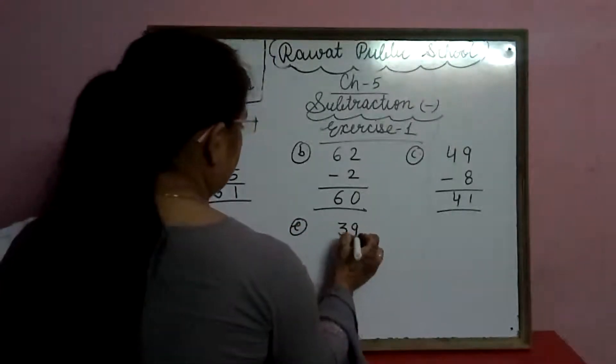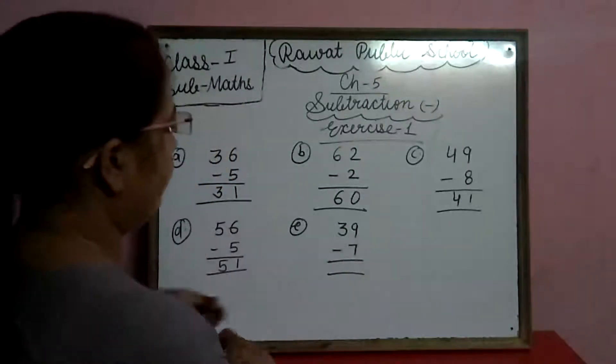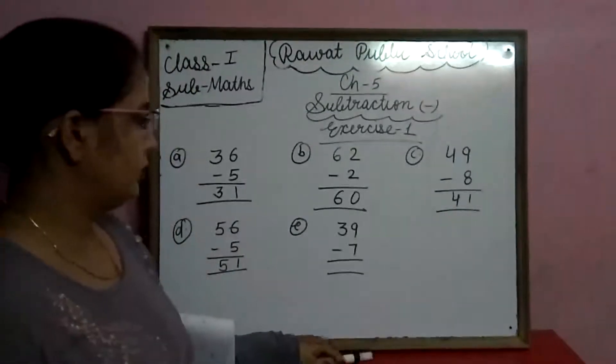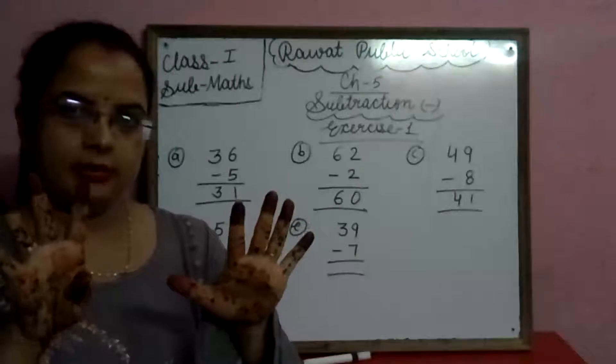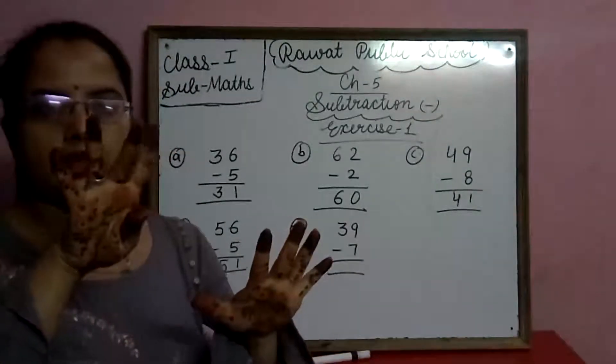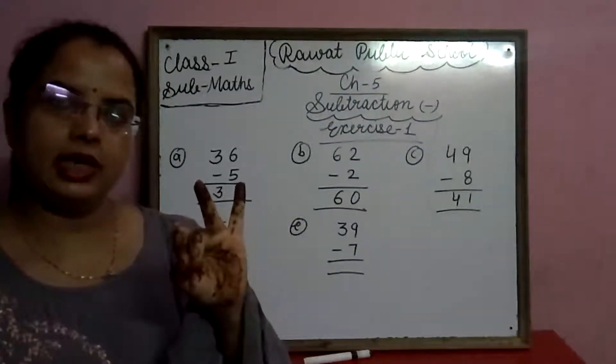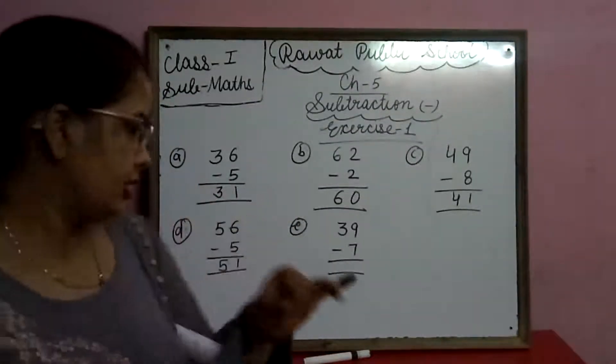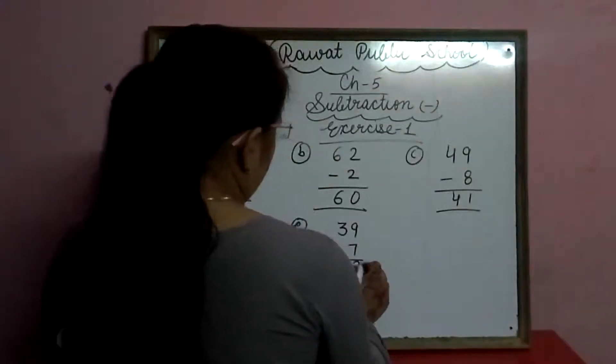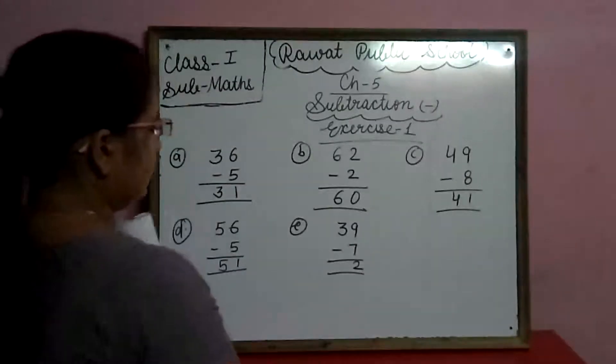E. 39. 39 mene se humi minus 7 karengo. 9 mene se 7 humi cut karengo. Okay? These are 9 fingers mene se humi 7 fingers cut karengo. 1, 2, 3, 4, 5, 6, 7. How many fingers are left? 2 fingers. So we will write here 2. 3 ke niche koi digit nahi hai, toh hum 3 as it is likhenge.